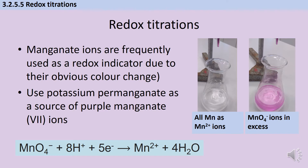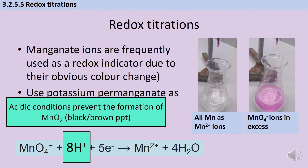This reduction only happens under acidic conditions. In addition to needing hydrogen ions to remove oxygen from the manganese, the acidic conditions also prevent the formation of manganese dioxide, which is a very dark brown precipitate. That precipitate would mask the color change — you wouldn't be able to see the change to purple. So it's really important that the solution is sufficiently acidic; we always add a big excess of acid so there's no chance of manganese dioxide precipitate forming.